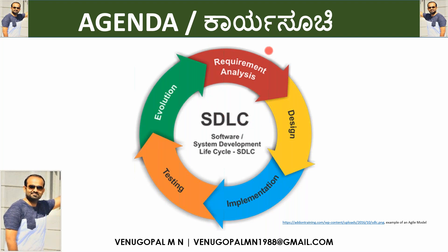This is the software development life cycle — it rotates like a circle. For a pictorial representation of the cycle: first phase is requirement analysis, followed by design phase, followed by implementation phase, then testing phase, and then evolution. Any additional requirement or additional functionality triggers the evolution phase. As soon as a new requirement or feature comes up, the cycle repeats. This is how the software development life cycle works.